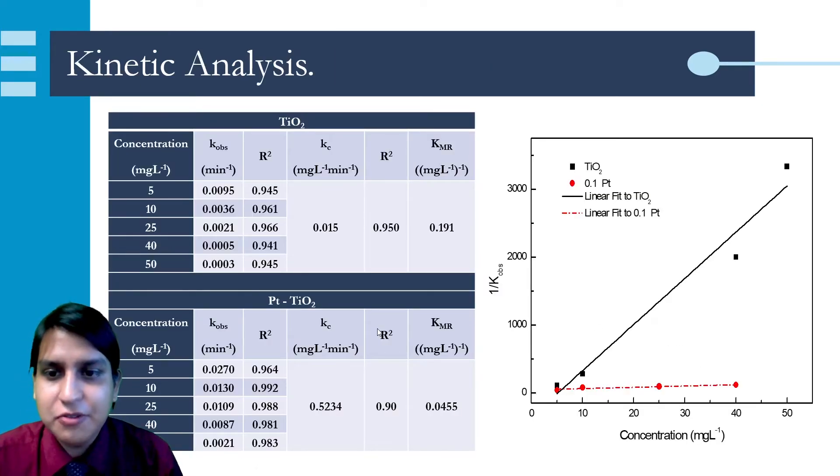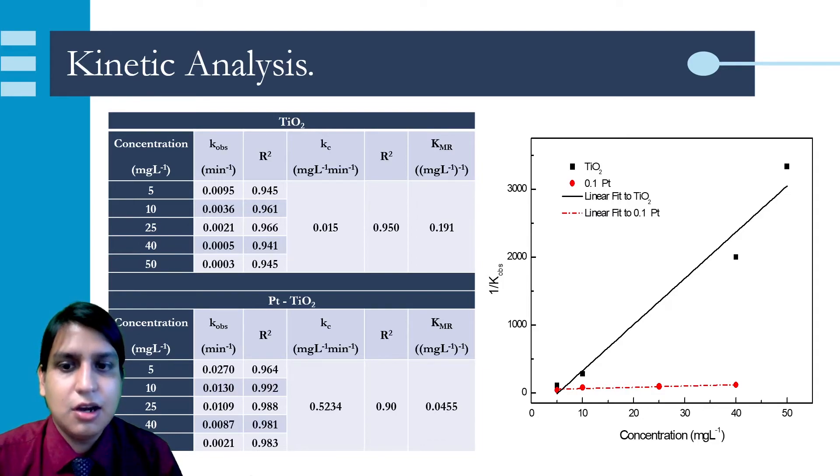To assess the effect of the initial concentration of the dye on the kinetics of color disappearance, different concentrations of initial methyl red dye solutions were tested: 5, 10, 25, 40, and 50 milligrams per liter. These experiments were performed using 0.1 weight percentage of platinum as a doping agent, since these proportions showed the best results in the degradation test.